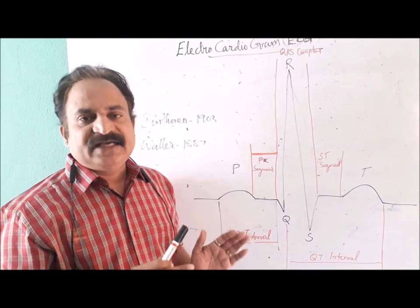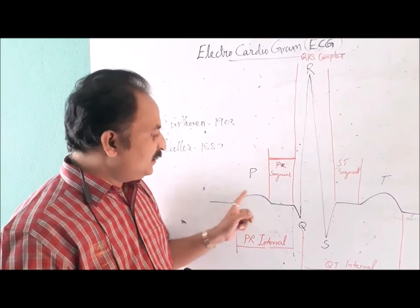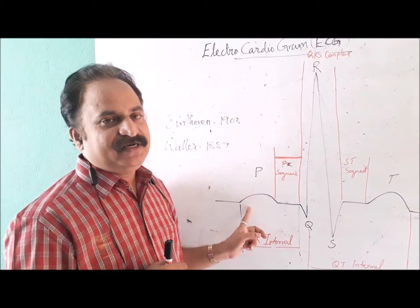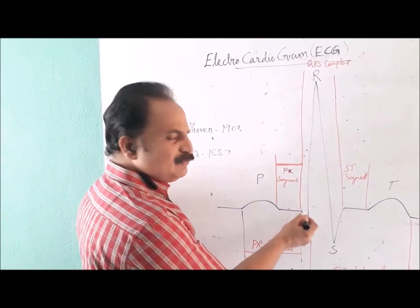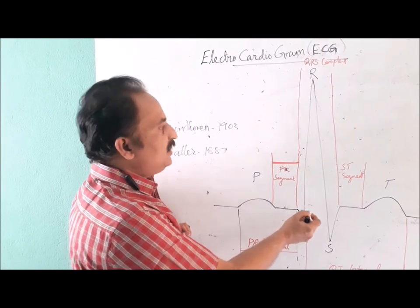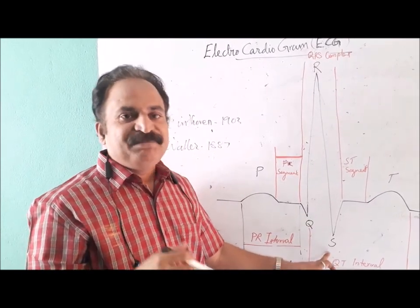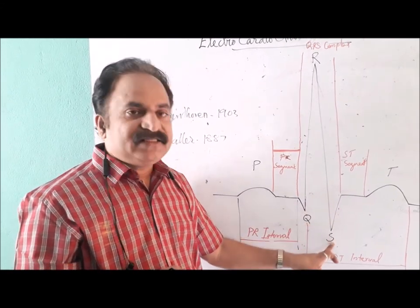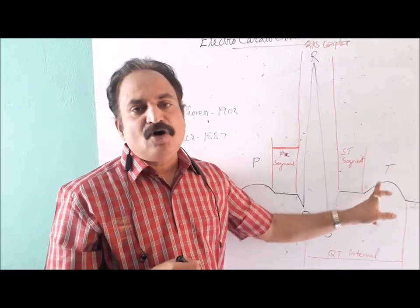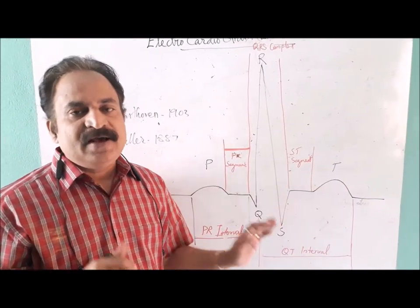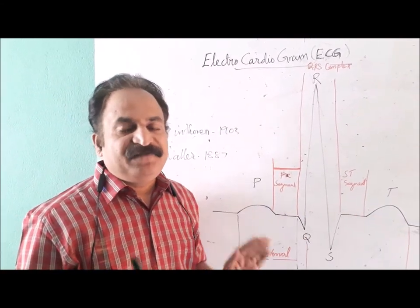How do these five waves look? P is a small upward deflection. Q is a small negative wave and is often inconspicuous. R is the tallest upward deflection. S is also a downward deflection similar to Q, but less conspicuous. T is a broad, rounded upward deflection. These are the five PQRST deflections.